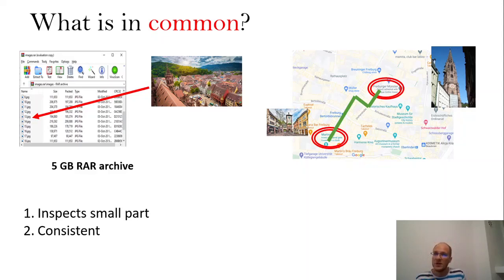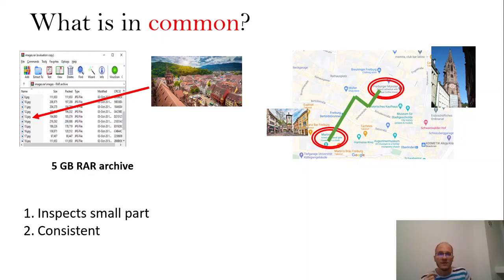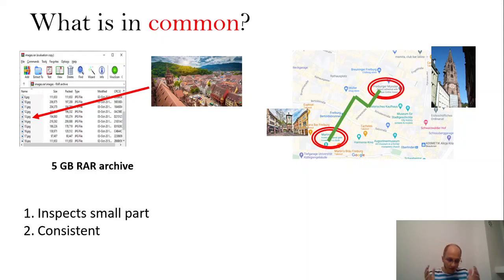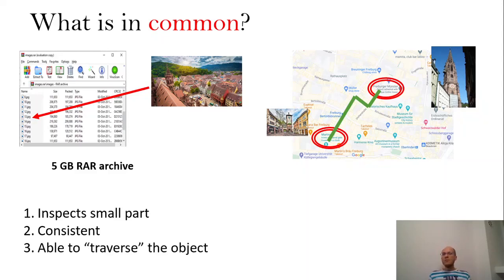The second commonality is that our operations are consistent. What I mean by this is: if you would ask for a short path between every two points on this map, after asking many such questions, you would be able to recreate the full map. Similarly, if you would ask what is image 9, image 10, image 11, and so on, collecting all these images would give you the whole archive. So this is what we mean by consistent.